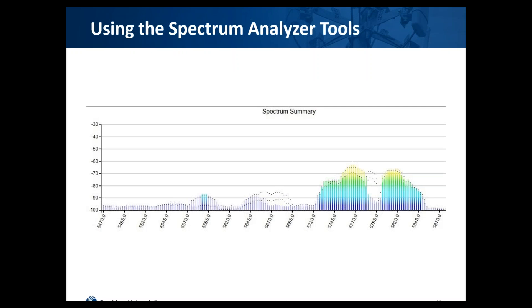This is a spectrum analyzer capture from a PTP 450 product — an actual desired install we did in New York State not too long ago. From left to right, we're going up in frequency, and the vertical axis is the amount of energy present in the band. Pretty much anything higher than the negative 90 position on our spectrum graph is going to cause us issues if we try to operate in that particular frequency. In all cases, we should try and go for the quietest we can, but there are other things that affect that decision.